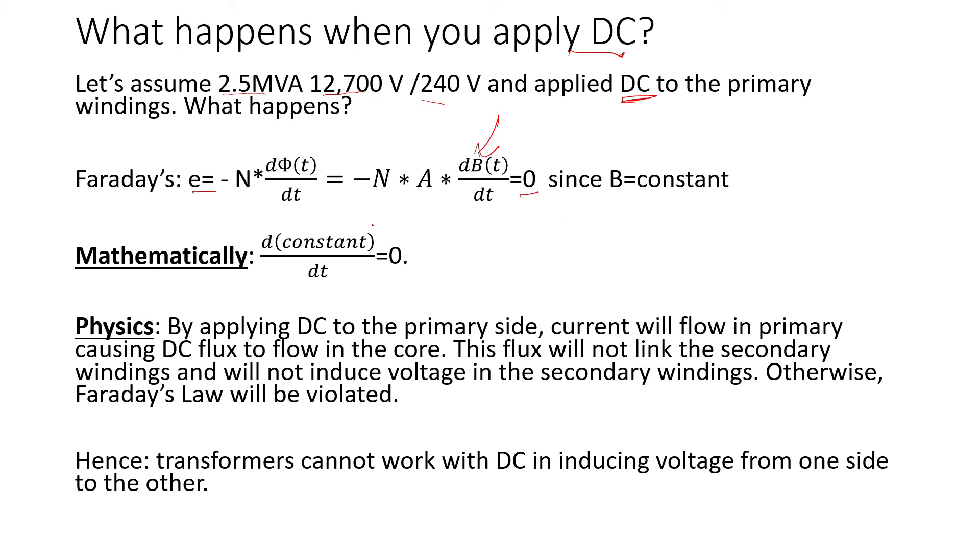Since the flux density will not be changing because I'm applying DC, the induced voltage will be zero since flux density will be constant. Mathematically, the derivative of the constant is just zero. In physics, by applying DC to the primary side, current will flow in the primary causing DC flux to flow in the core, but this flux will not link the secondary windings and will not induce voltage in the secondary windings.